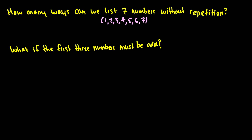So let's do an application of this. How many ways can we list 7 numbers without repetition? This means we pick some number out of the 7, so there are 7 choices for the first number. Now we cross that number off — say it was 4 — so we have 6 numbers left for the second position, then 5 left, then 4, and this continues until we have 1 left. So this is the same thing as 7 factorial.